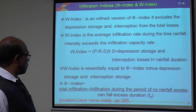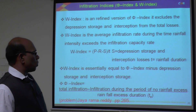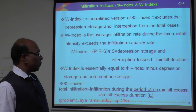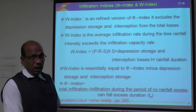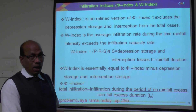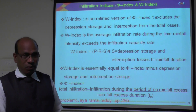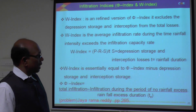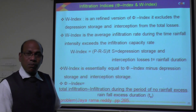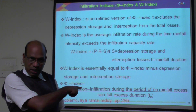The W index essentially equals the phi index minus depression and initial storage. The formula for the phi (π) index is: phi index = (Total infiltration - Infiltration due to period of no rainfall excess) / Rainfall excess duration. In the earlier problem, the no rainfall excess duration is 5 hours and the rainfall excess duration is also 5 hours.